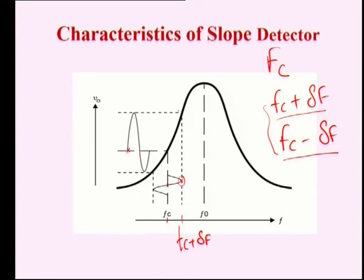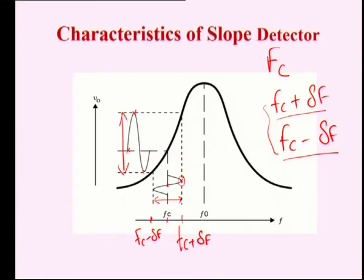At this point a positive peak is generated, and at the point Fc minus ΔF the amplitude should be a negative peak. So within this range, from Fc to Fc minus ΔF to Fc plus ΔF, the amplitude varies accordingly. We are converting the variation in frequency into variation in amplitude, and this can be done easily by the slope detector. This is the characteristic of the slope detector.